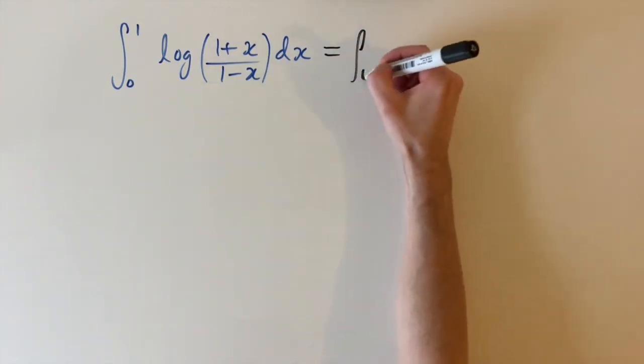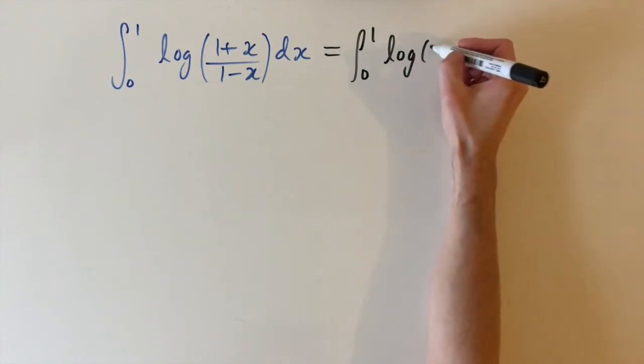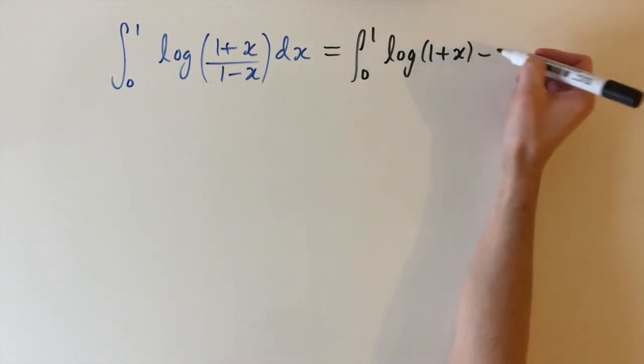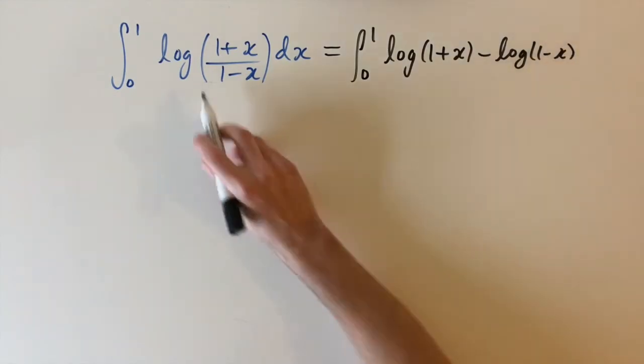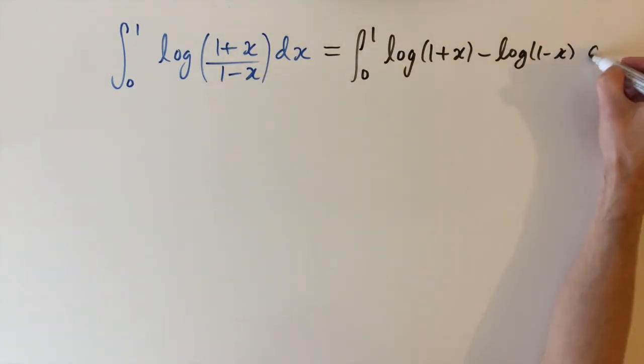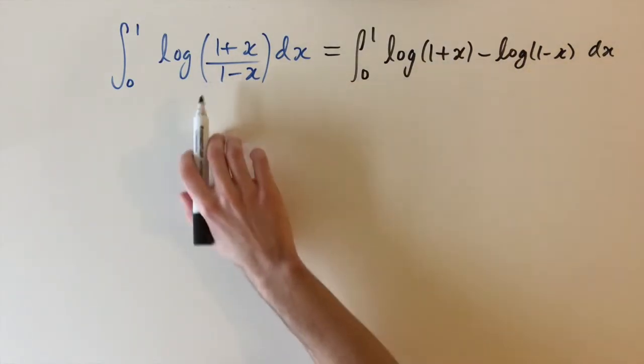So what I mean by this is we have the integral between 0 and 1 and we have the logarithm of 1 plus x minus the logarithm of 1 minus x and this is just an equivalent formulation of this. So now we want to integrate two logarithms essentially which is a lot easier than this.